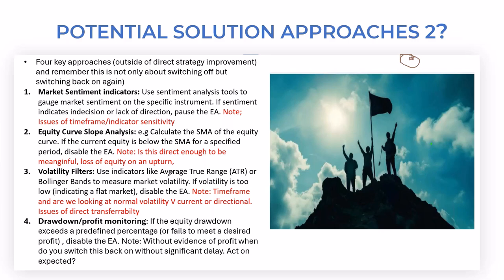We can also look at the equity curve itself. We can calculate the moving average of the equity curve, and if the equity curve appears to be dropping and is below the simple moving average for a specified period, stop trading or disable your EA if automated. A couple of things though: it is a lagging indicator, so it's likely to lag not only in terms of switching off but switching back on as well, which means you may miss part of the upturn of the strategy. On volatility filters — I think there's something in volatility, and it's not necessarily just whether it's higher or lower than the norm, but also the direction of the volatility.